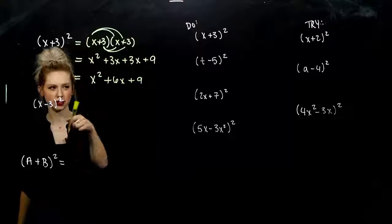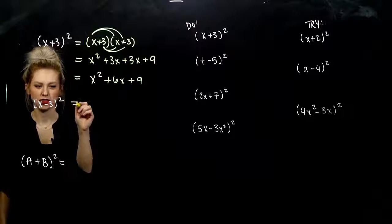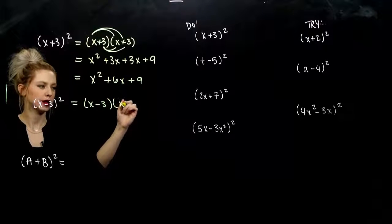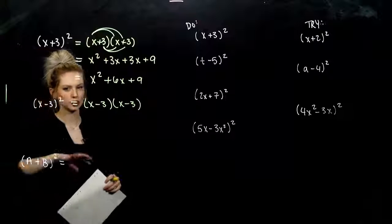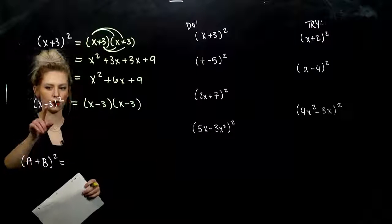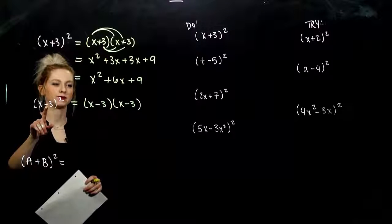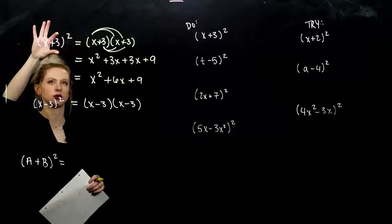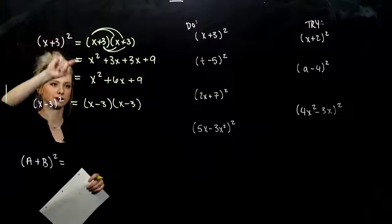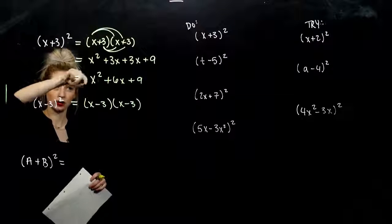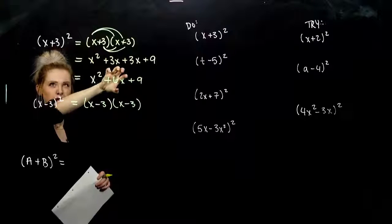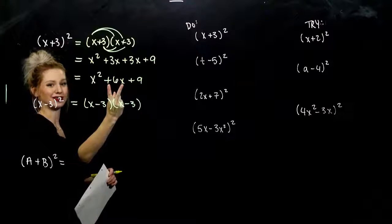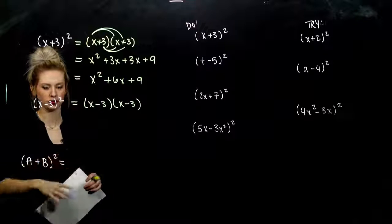We'll do one with a minus so you can see the same pattern. This quantity, this base, times itself two times in total. We can't just distribute the square over the sum or difference. If I square the first one and square the last one, I get X squared plus 9. Is that what it's really equivalent to? No, we're missing that middle term. We can't ever distribute over a plus or a minus because we lose a significant chunk of that area of our rectangles.